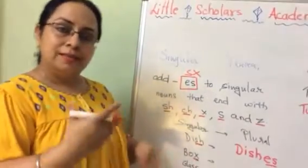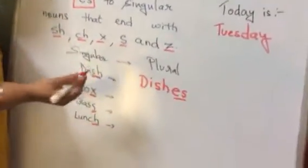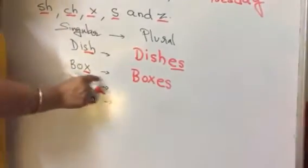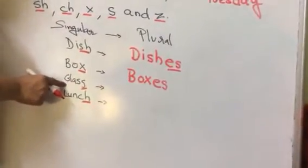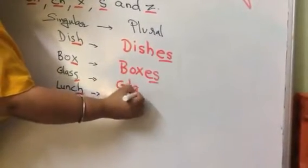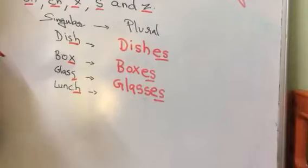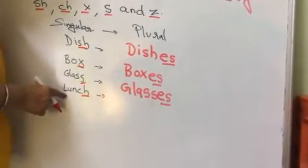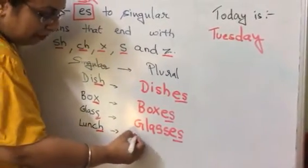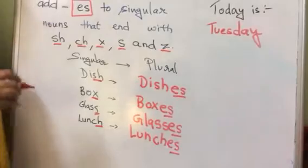Glass, g-l-a-s-s — glass ka plural, how will we change it? G-l-a-s-s-e-s — glasses. Aur next, l-u-n-c-h — lunch. Last mein c-h a-gya, toh iske bhi end mein hum e-s karke we will change it to a plural noun. E-s — lunches.